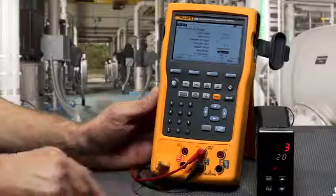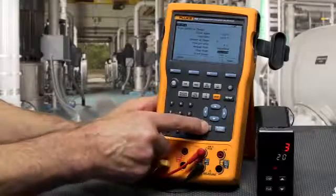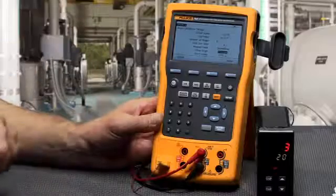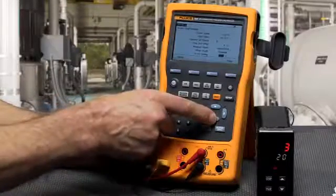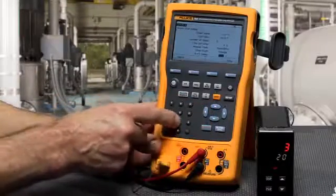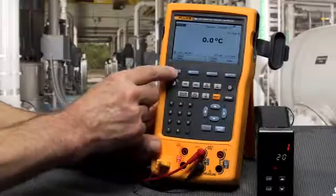Either sawtooth, which changes from starting value to ending value and then starts over again, or triangle, which starts at 0%, the beginning value, goes to the ending value, and then works its way back down.